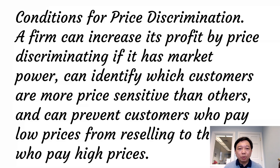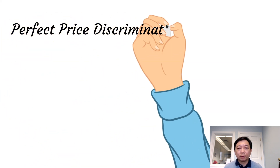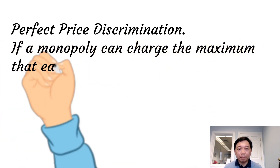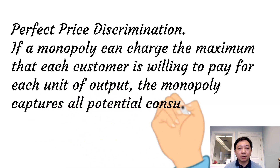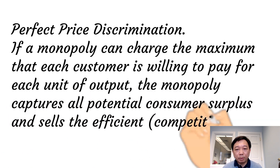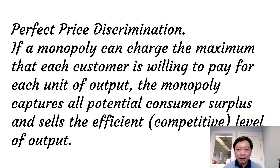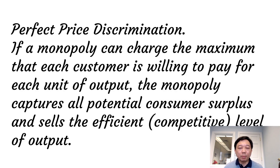There are three types of price discrimination. The first type is called perfect price discrimination, also known as first-degree price discrimination. The firm sells each unit at the maximum amount each customer is willing to pay and captures all the potential consumer surplus. However, perfect price discrimination is rare because firms do not have perfect information about their customers.